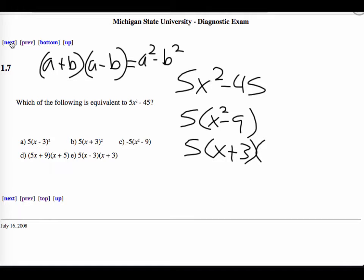So basically, 5 times x plus 3 times x minus 3 is the prime factorization of this thing.